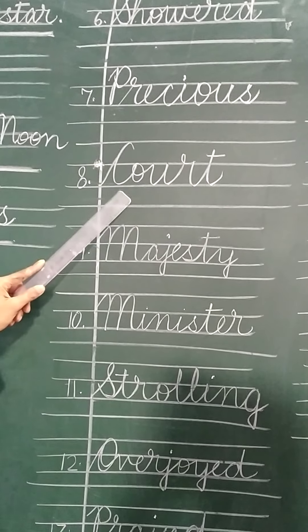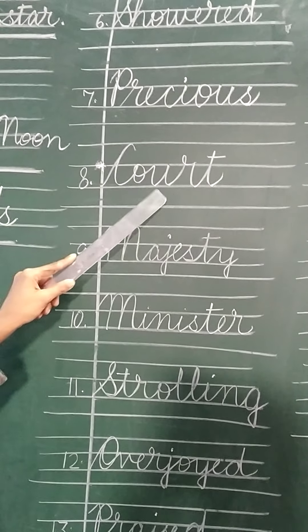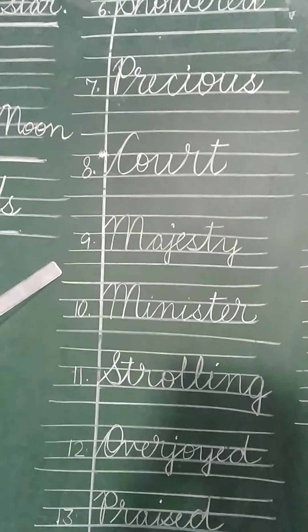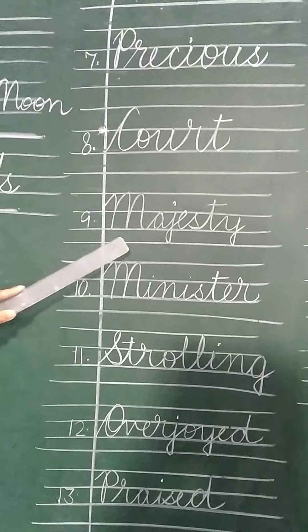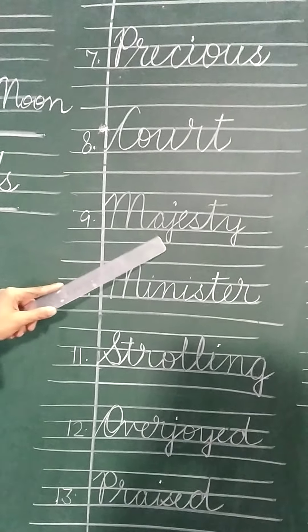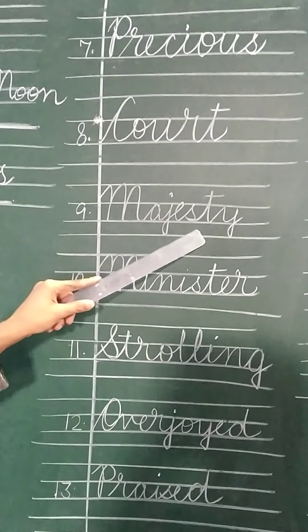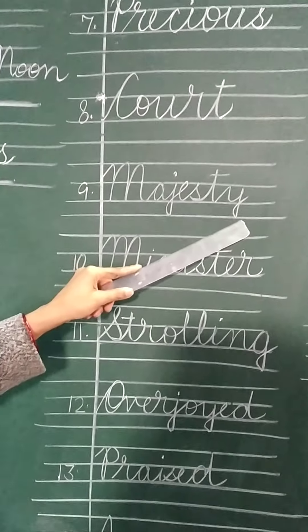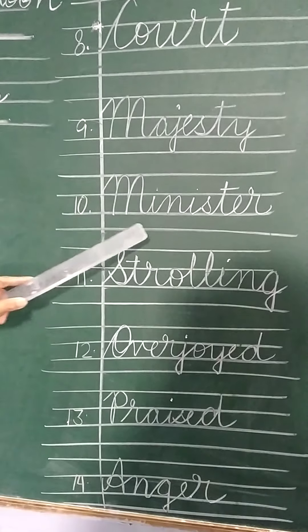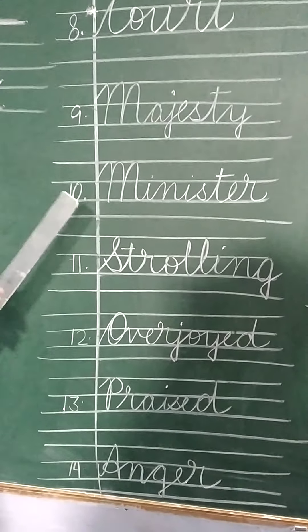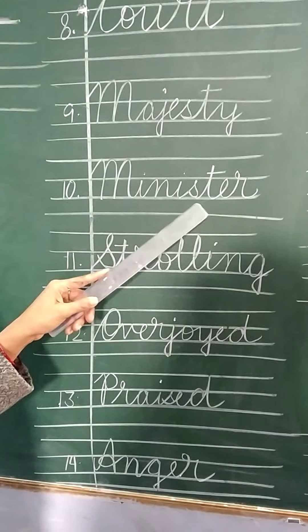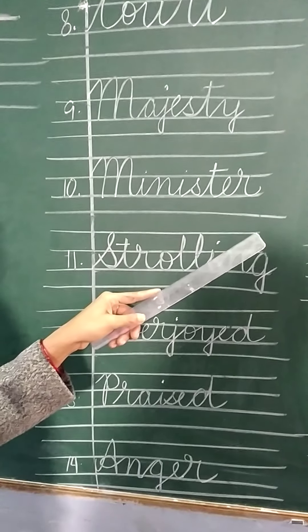Number eight is court — C-O-U-R-T, court. Then number nine is majesty — M-A-J-E-S-T-Y, majesty. Number ten is minister — M-I-N-I-S-T-E-R, minister.